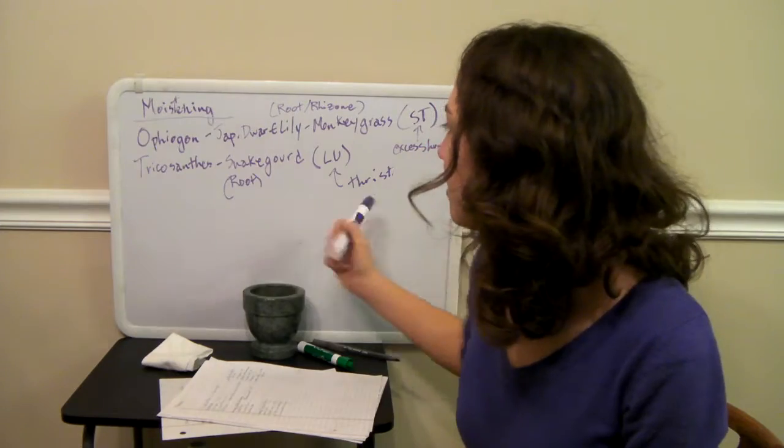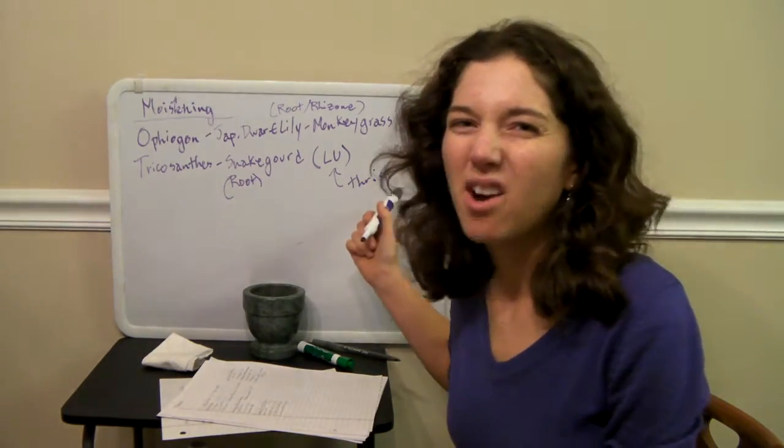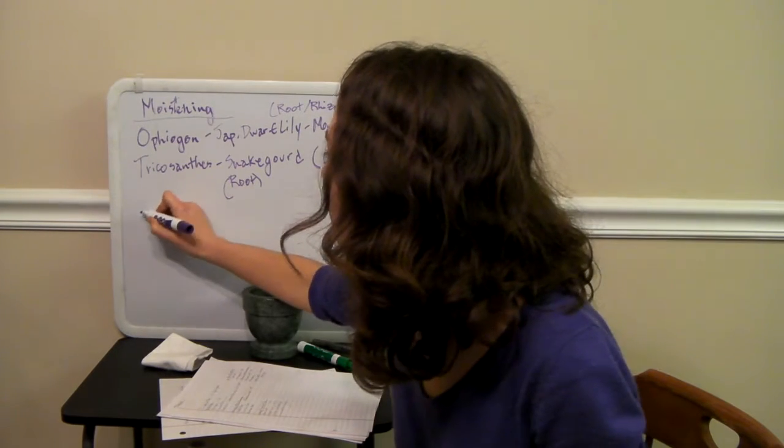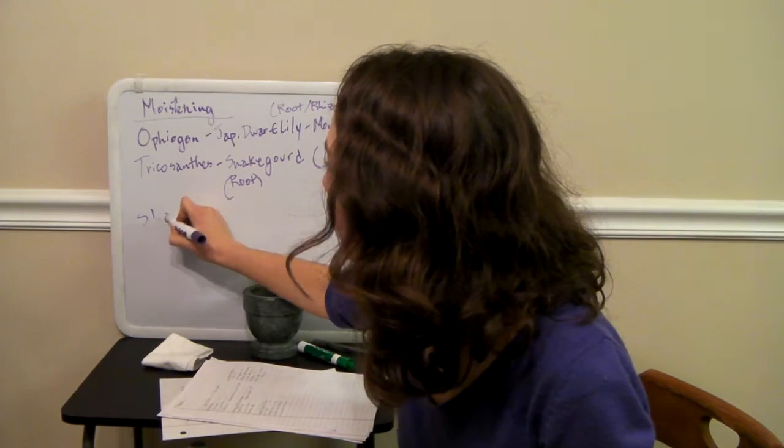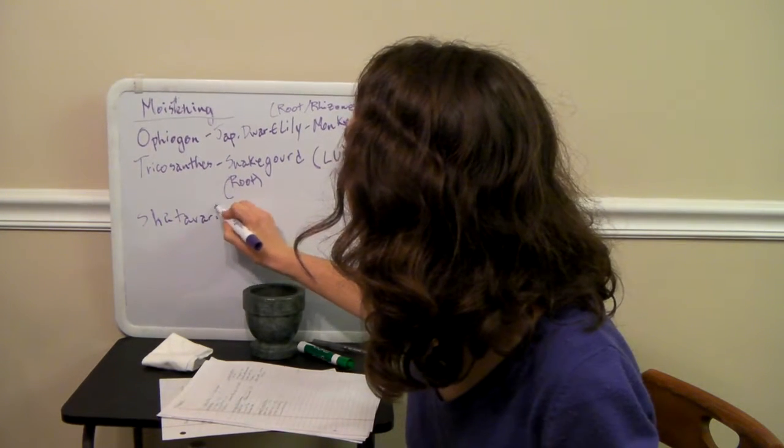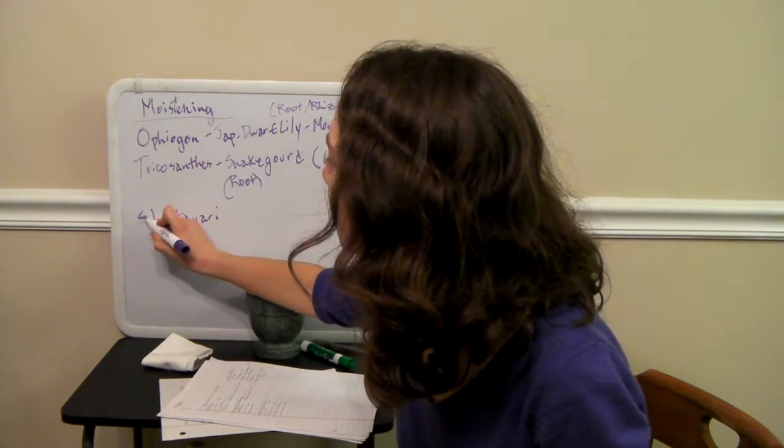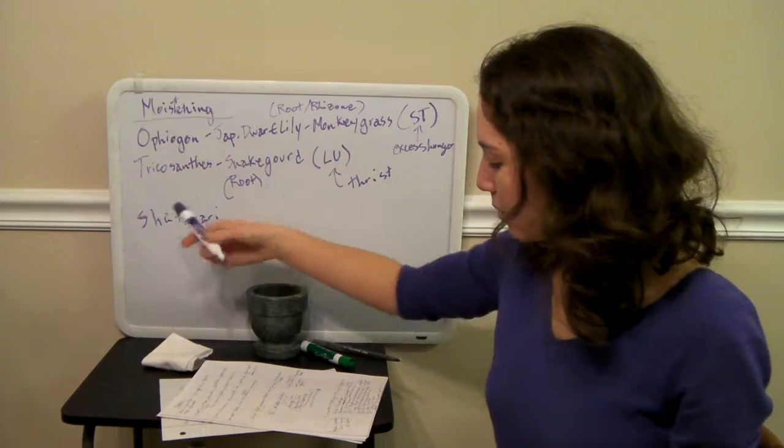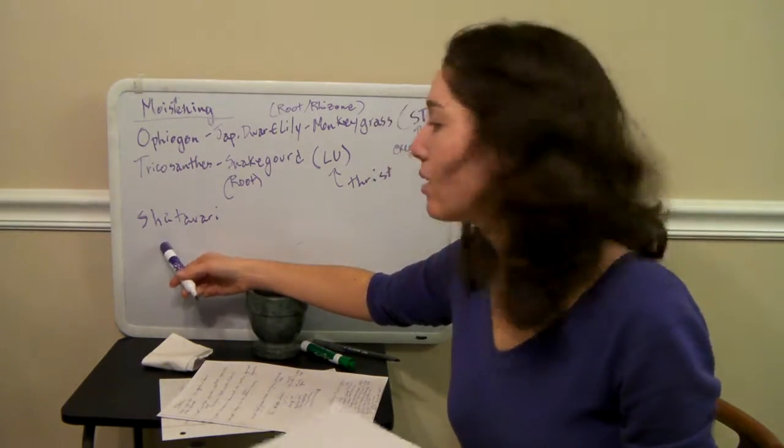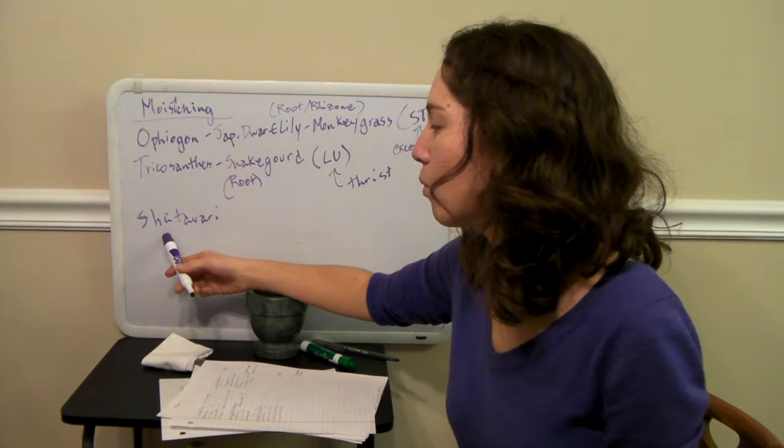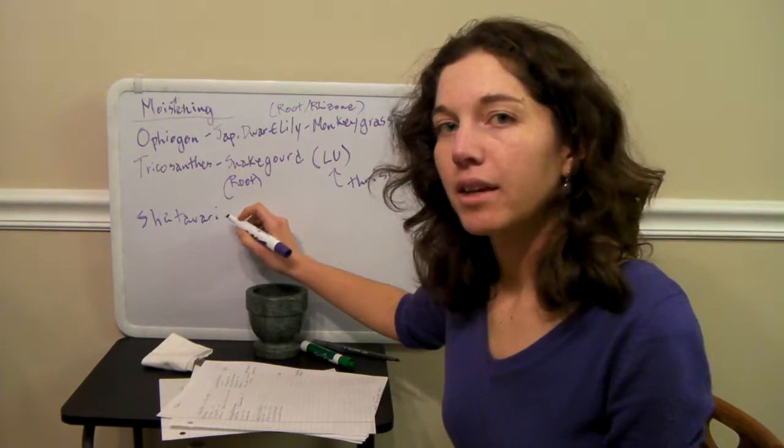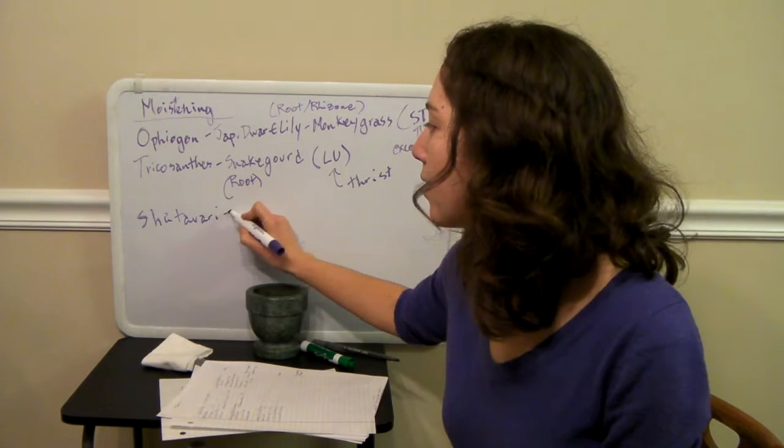So it's primarily used for the symptom of thirst, because in Chinese medicine that is derived from the lung. So Trichosanthes, Ophiopogon, you might also have some kind of dry cough that might also be associated with lung dryness. Trichosanthes. Shatavari is the next one I want to mention.